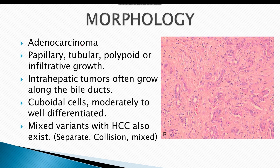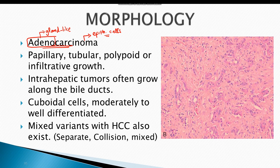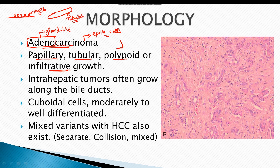The gross picture of cholangiocarcinoma reveals a grayish nodular structure, which can either protrude into the lumen of the bile duct or form an infiltrative lesion. Histologically, all cholangiocarcinomas are typically adenocarcinomas — adeno meaning gland-like and carcinoma meaning malignant proliferation of epithelial cells. These tumors may form papillary, tubular, polypoid, or infiltrative growth patterns. Papillary growth forms finger-like structures protruding into the lumen; tubular forms tube-like structures; infiltrative growth spreads into the wall without protruding into the lumen.